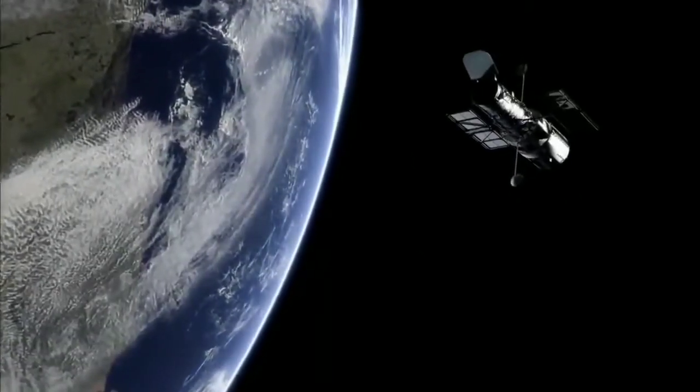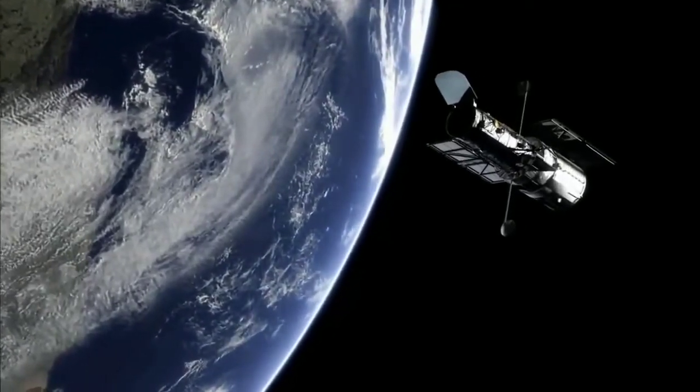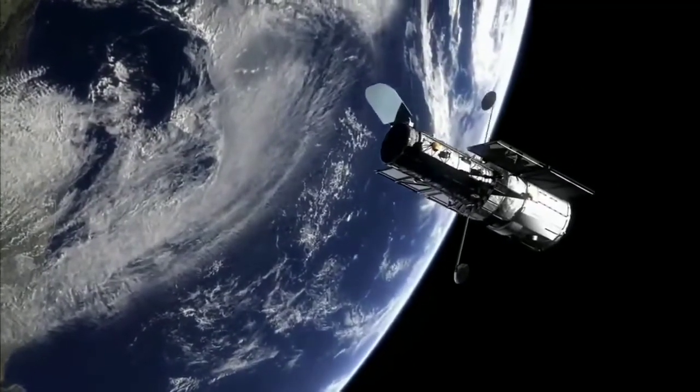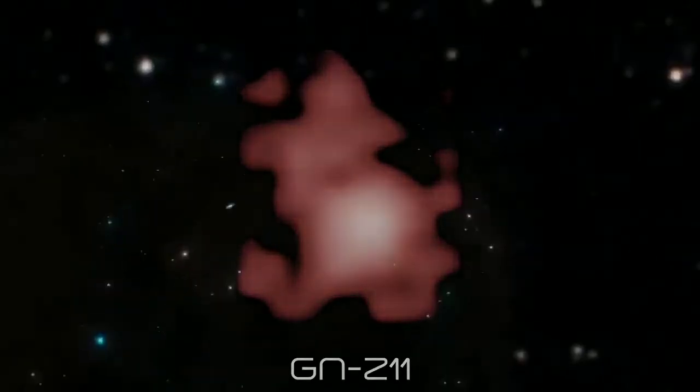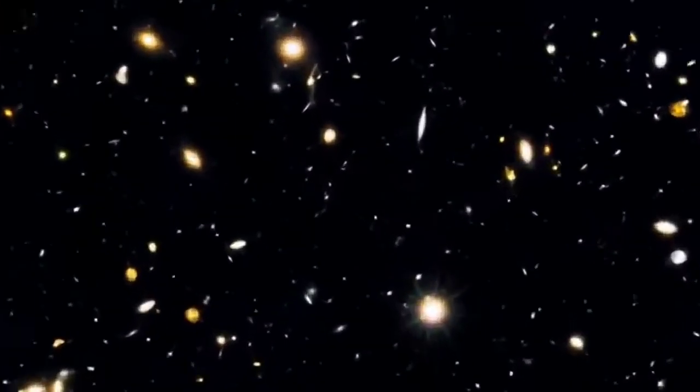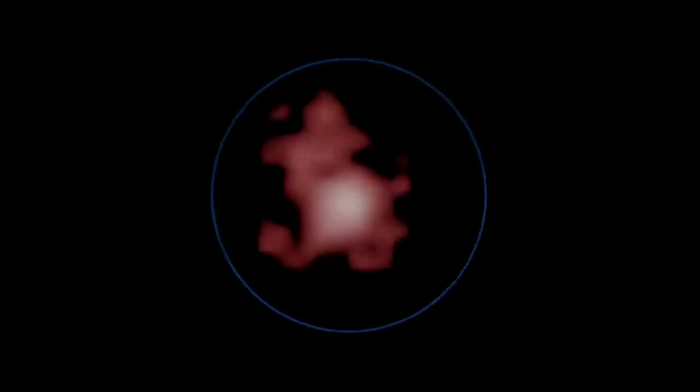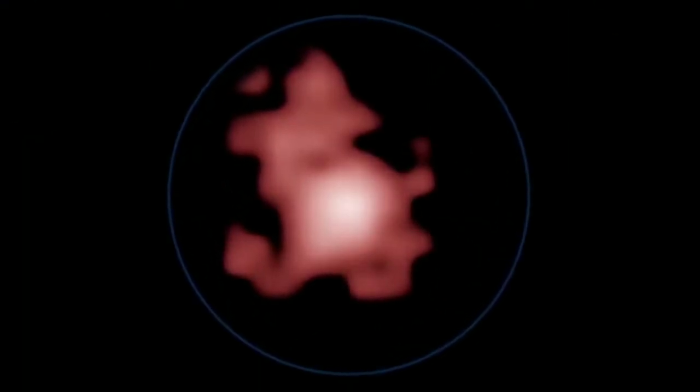One of the main goals of the Hubble telescope was to find the most distant galaxy in the known universe. It achieved this in 2016, when it discovered galaxy GN-Z11. This galaxy is located 32 billion light-years away, and the light we see from it shows the galaxy as it was 13.4 billion years ago.